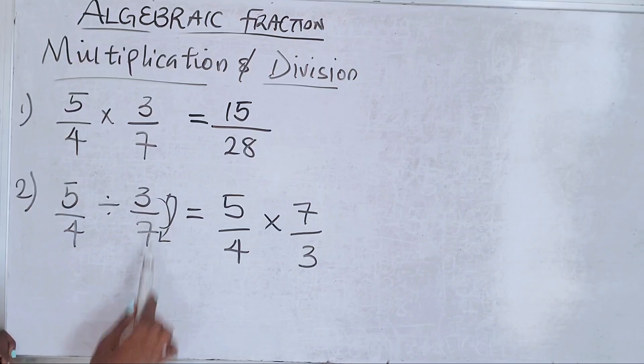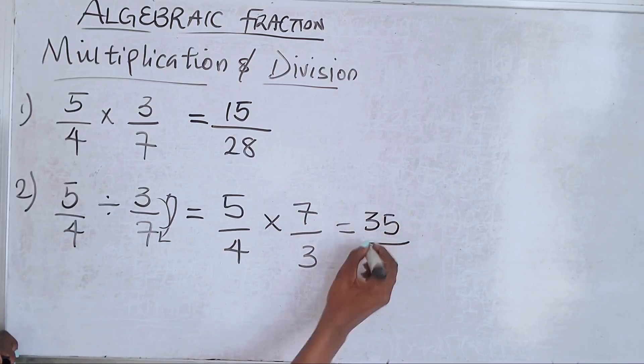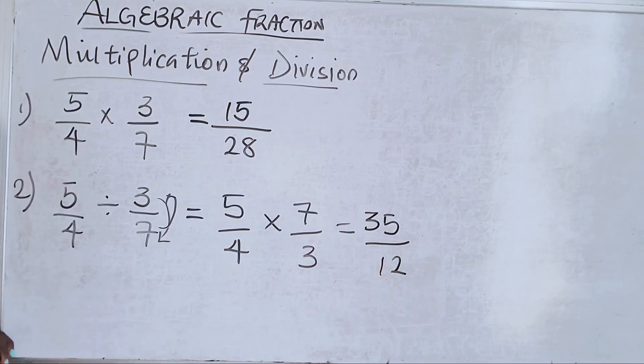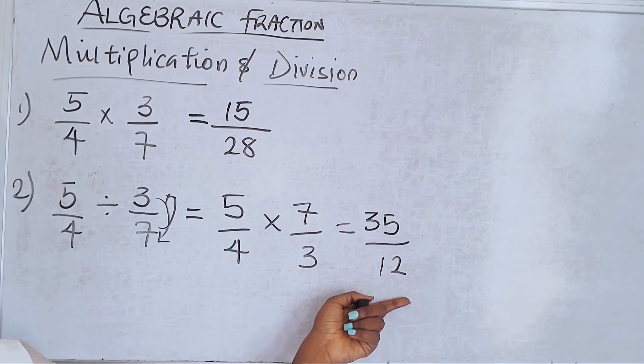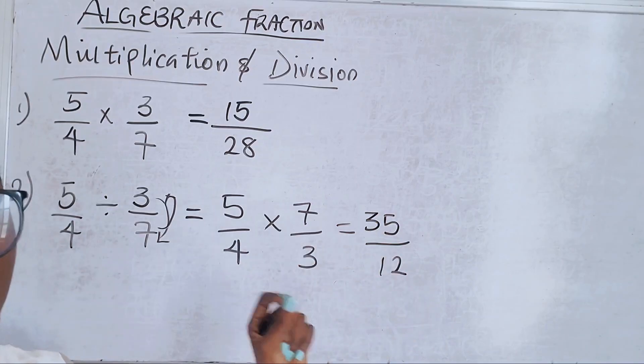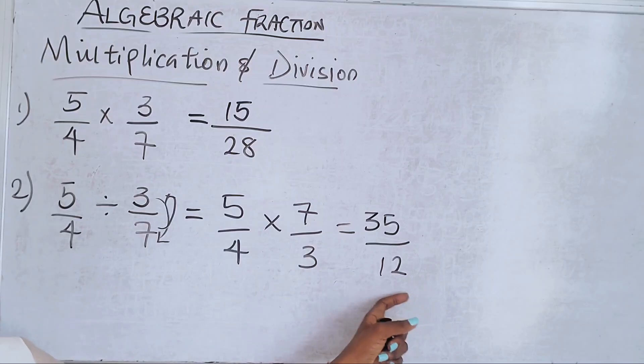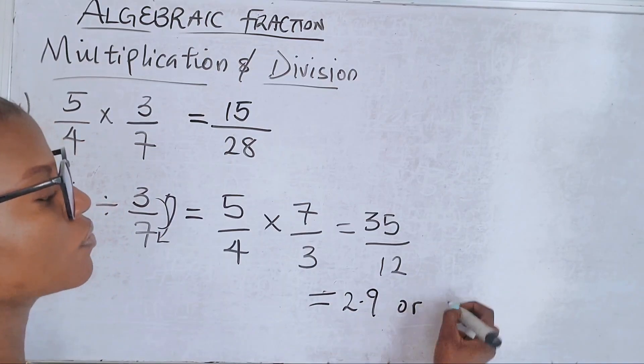So in this case you have 5/4 times 7/3: 5 times 7 is 35 all over 4 times 3 which is 12. Remember, this is called an improper fraction - change it to a mixed fraction or a decimal if this is not in an objective question.